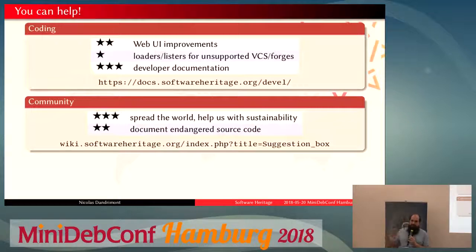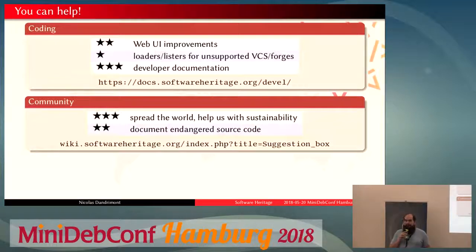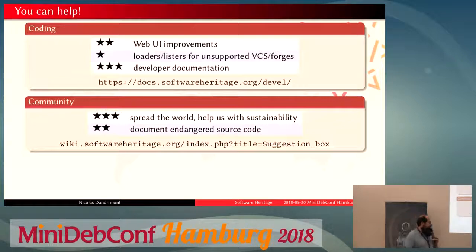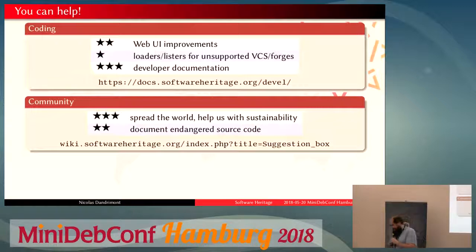Of course we need to spread the word and make the project sustainable. We have a few sponsors: Microsoft, Nokia, Huawei, GitHub, the University of Bologna, and Inria. But we need to keep spreading the word and keep the project sustainable. We also need to save endangered source code — for that we have a suggestion box on the wiki. For instance, we have in the back of our minds archiving SourceForge, because we know that isn't very sustainable and it's at risk of being taken down at some point.